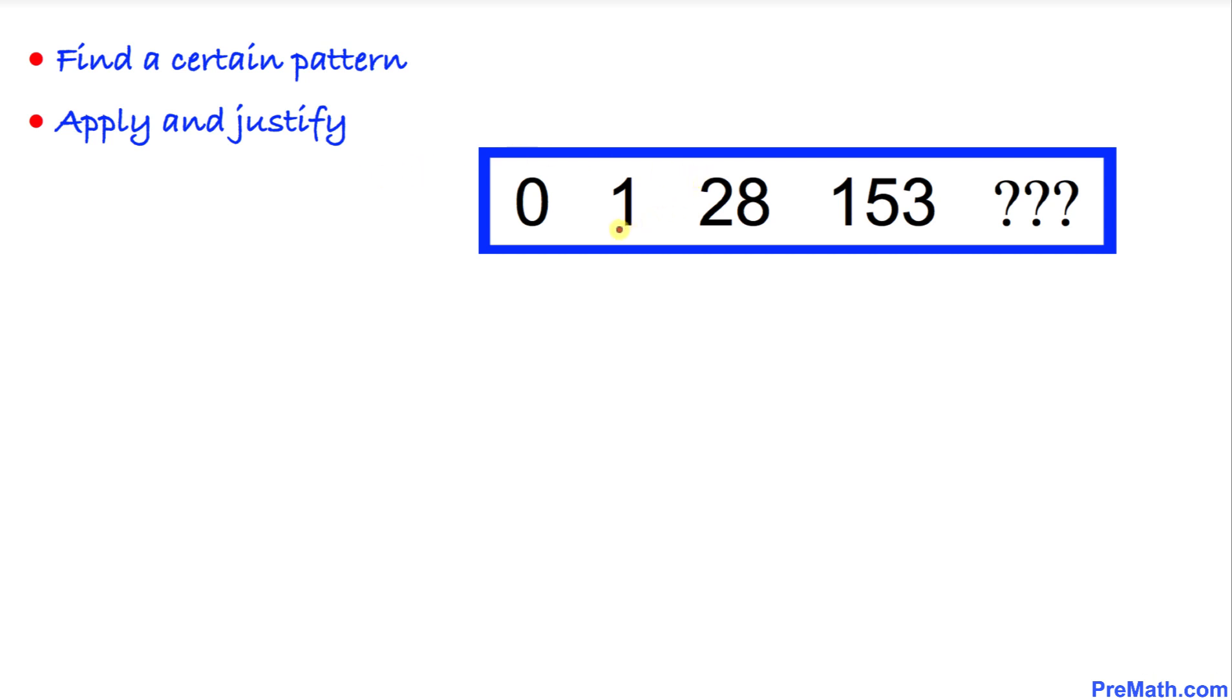Let's look at this problem very carefully. Whenever we are dealing with a sequence, the best way is to find the common difference between two consecutive numbers. Let's look at 0 and 1. The common difference is 1. That means 1 minus 0 is 1.